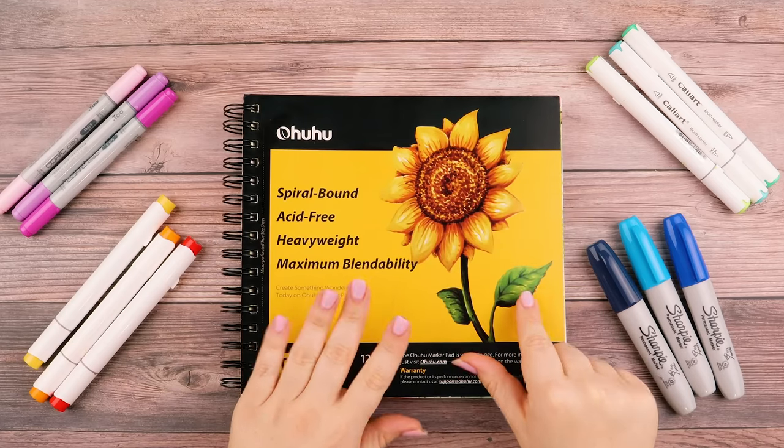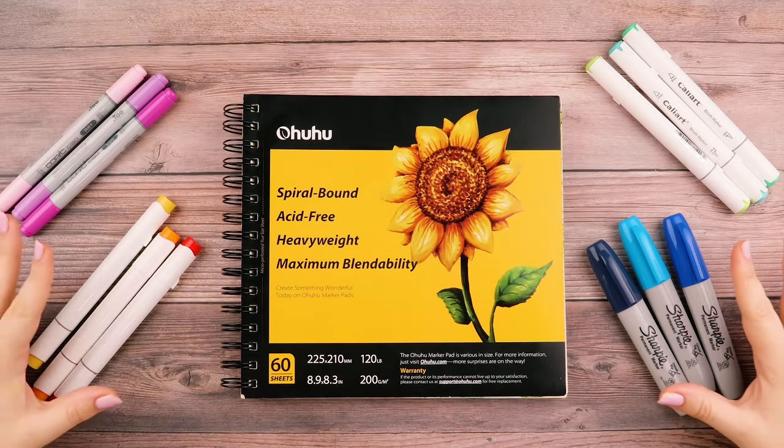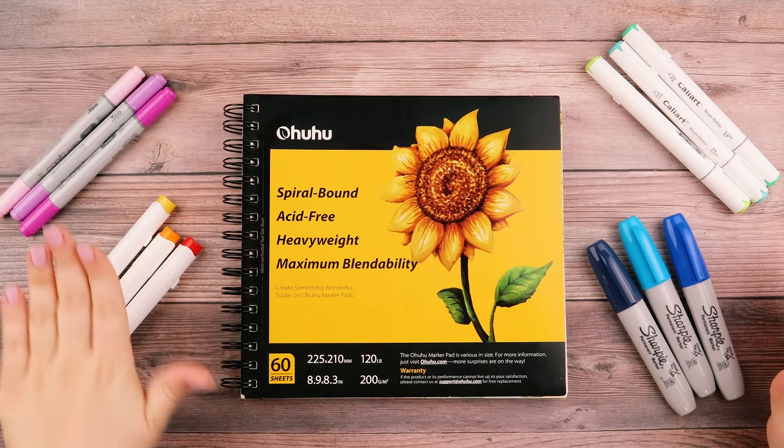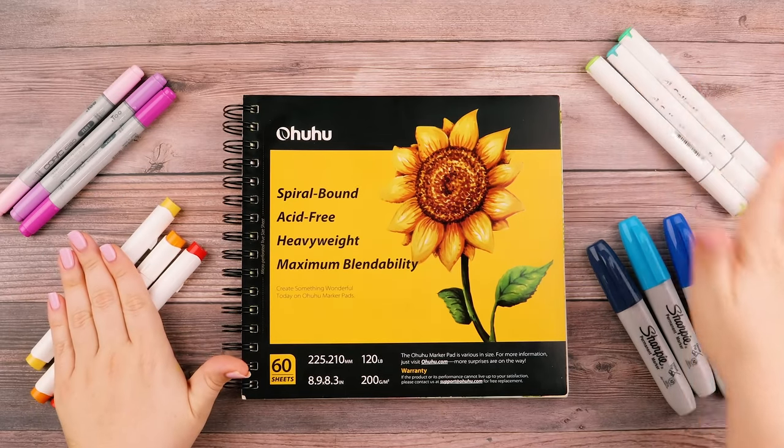Let's go over how to blend alcohol markers. I've got all these different brands: the Copic Chows, the Ohuhus, Caliart, and Sharpie.